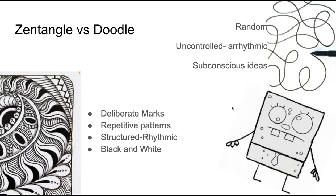Now what is the difference between a Zentangle and a doodle? A Zentangle has deliberate marks. They're repetitive patterns that are more structured, so they're rhythmic. You can kind of see what's going to happen next. Usually they are black and white. Occasionally you will see Zentangles in color, but for the most part they are in black and white.